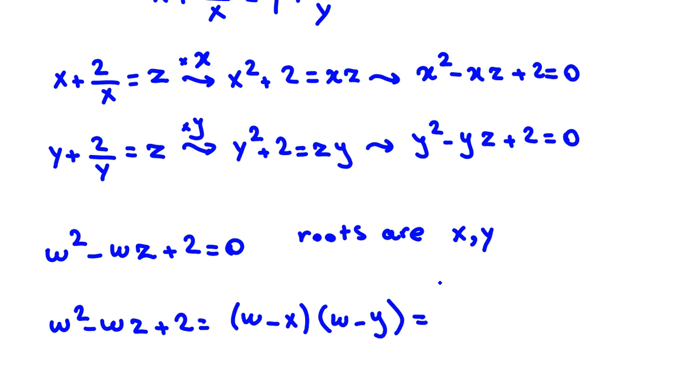You can say w squared minus wz plus 2. Because the roots are x and y, it will be w minus x times w minus y. When the roots are x and y, it will be w squared minus wy minus wx minus x times minus y, plus xy. It will be w squared plus w times minus x minus y plus xy.